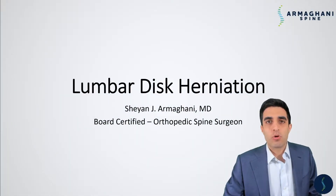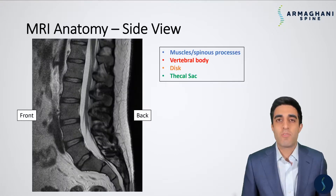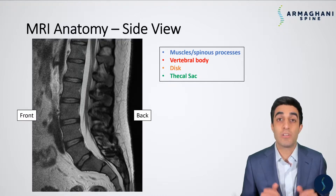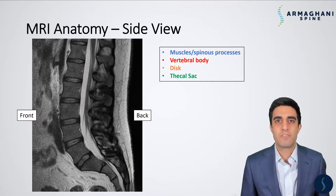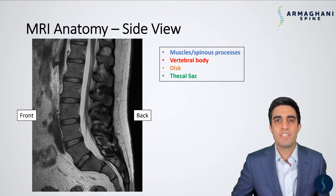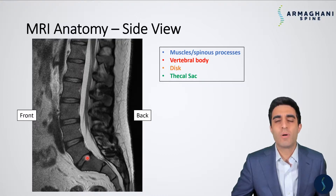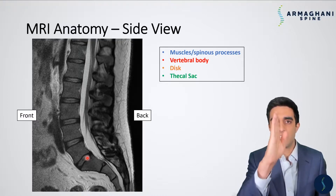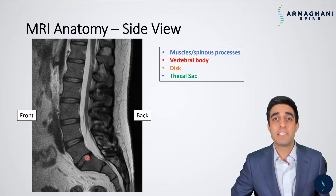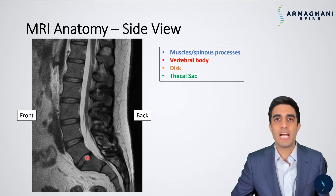Now let's discuss lumbar disc herniations. Before we get started, we need a better understanding of what the normal MRI anatomy of the lumbar spine looks like. Patients frequently come in already with an MRI, so let's take a look at some anatomic landmarks. Here you have a normal MRI of your low back — this is a side view. An MRI basically takes slices of your body, and this particular slice goes right down the middle. There isn't really a left or right — we're looking at you right in the middle.